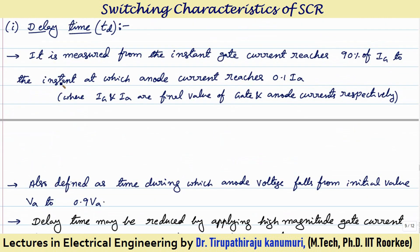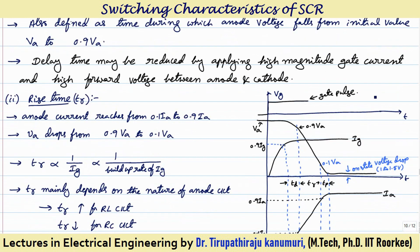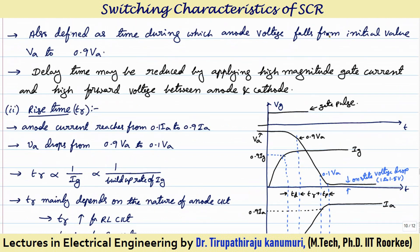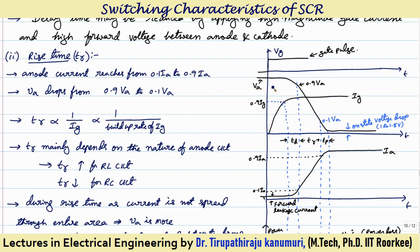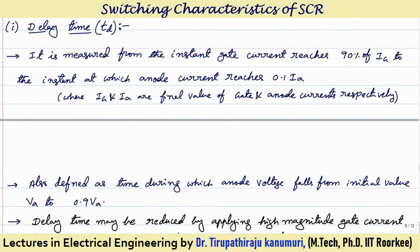Delay time is measured from the instant the gate current reaches 90% of the rated gate current to the instant at which the anode current reaches 0.1 times of Ia, where Ig and Ia are the final values of the gate and anode currents respectively. Alternatively, it can be defined as the time during which the anode voltage falls from its initial value Va to 90% of Va. We measure this time starting from when the gate current reaches 90% of its value.